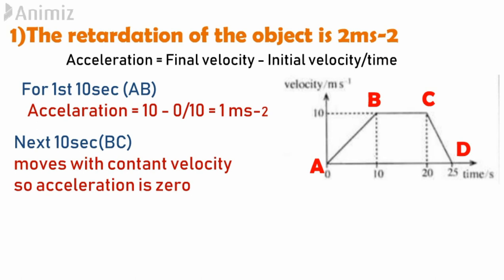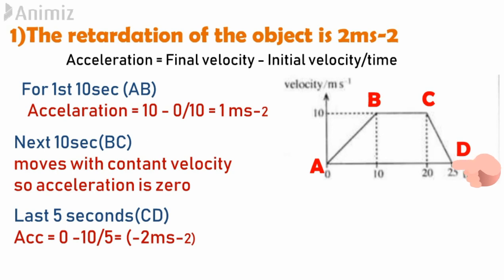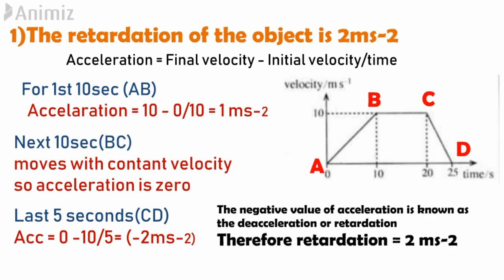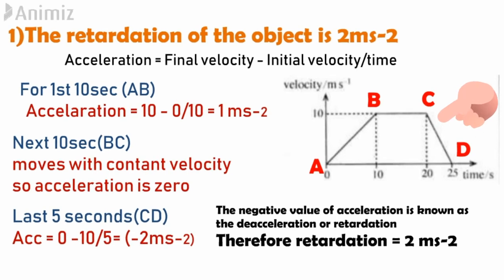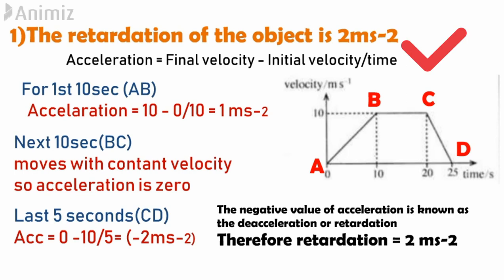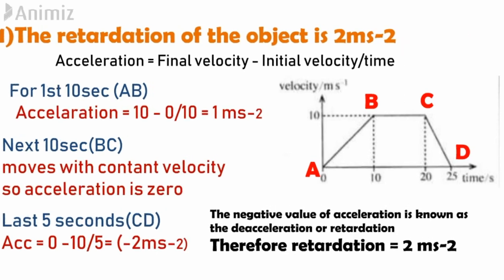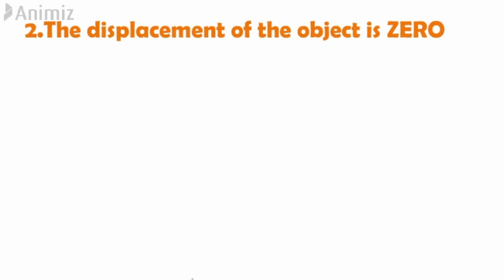From C to D, the final velocity is 0, initial velocity is 10, and time is 5 seconds, which gives minus 2 m/s². Since the acceleration is negative, we call it deceleration or retardation. Therefore the retardation is equal to 2 m/s², and this is the correct answer — option 1 states the retardation of the object is 2 m/s².